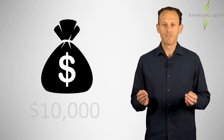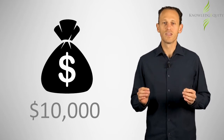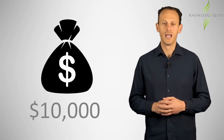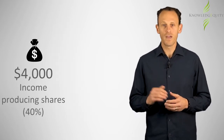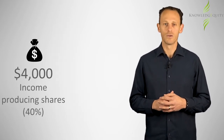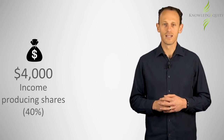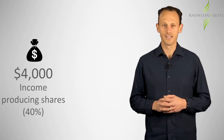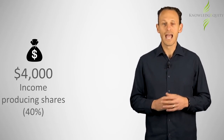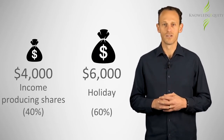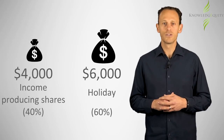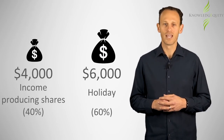Max provides his employer with a declaration that $4,000 of the loan was used to purchase income-producing shares listed on the ASX, and $6,000 was used for a family holiday to Tasmania.